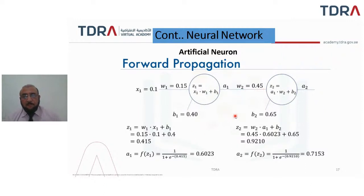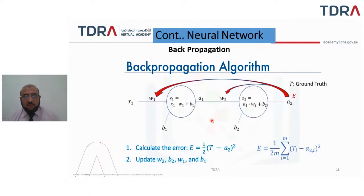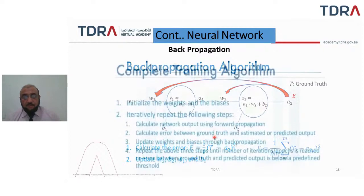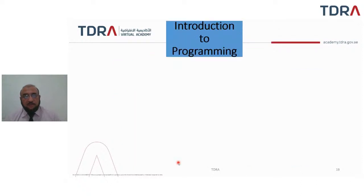Then we have back propagation. If the output value is not the desired value, the output is tuned using the back propagation algorithm. The complete training process initializes weights and biases, then iteratively calculates network output via forward propagation, calculates the error between the ground truth and predicted output, updates weights and biases through back propagation, and repeats until the number of iterations is reached or the error falls below a predefined threshold.